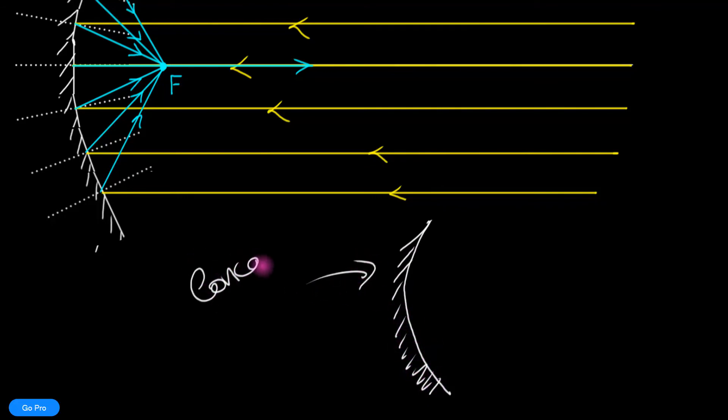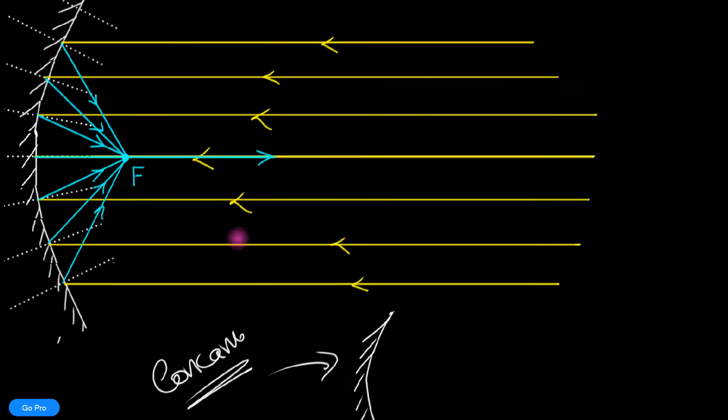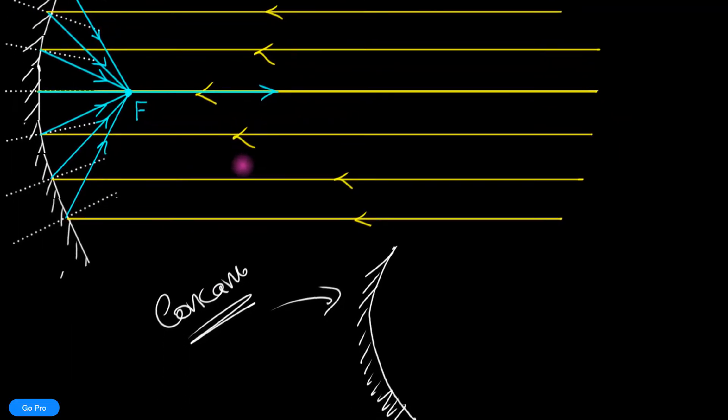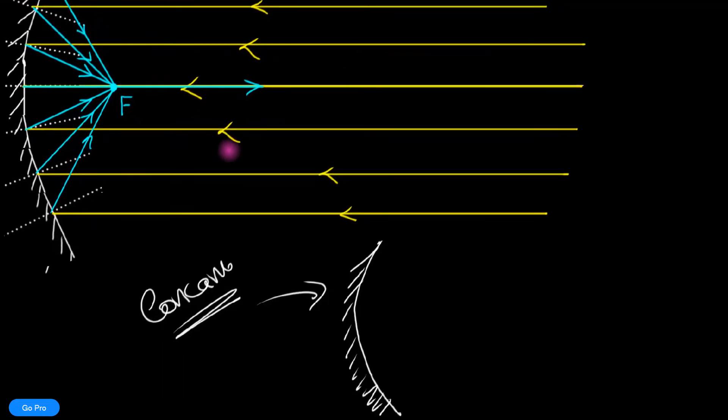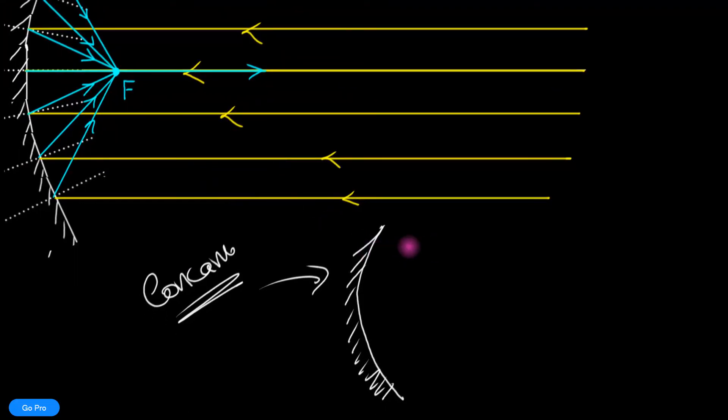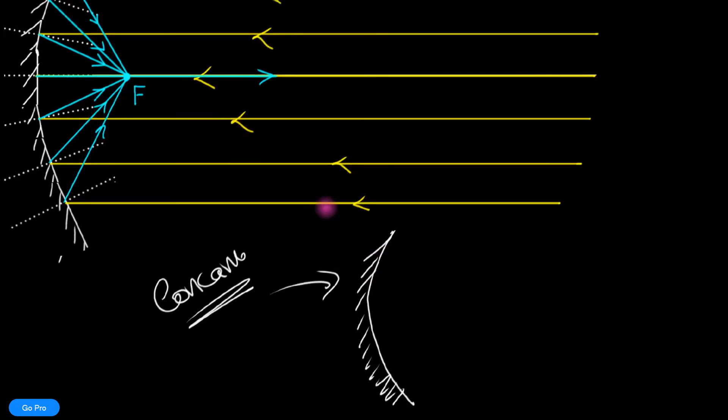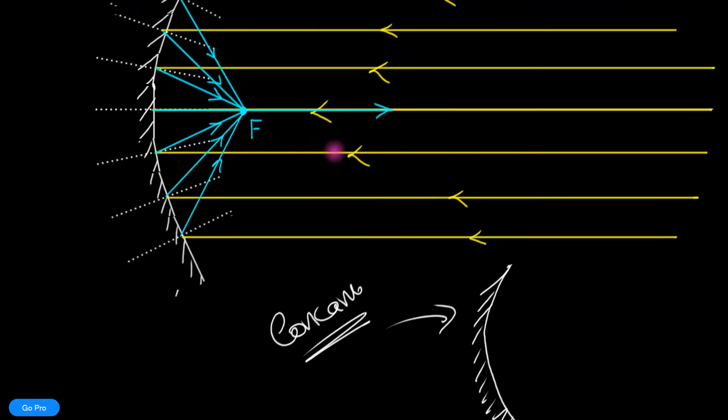That curvature is a concave curvature. So you can notice that in order to actually curve your rays of light and focus them, you require a concave mirror. Concave is what we need.